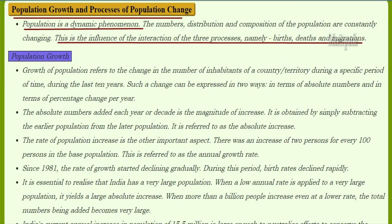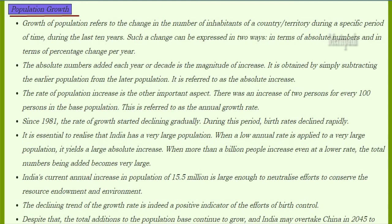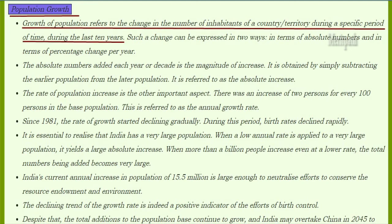Population is a dynamic phenomenon. Numbers, distribution, and composition of the population are constantly changing under the influence of three processes: birth, death, and migration. Population growth refers to the change in number of inhabitants of a country or territory during a specific period of time, such as the last 10 years.